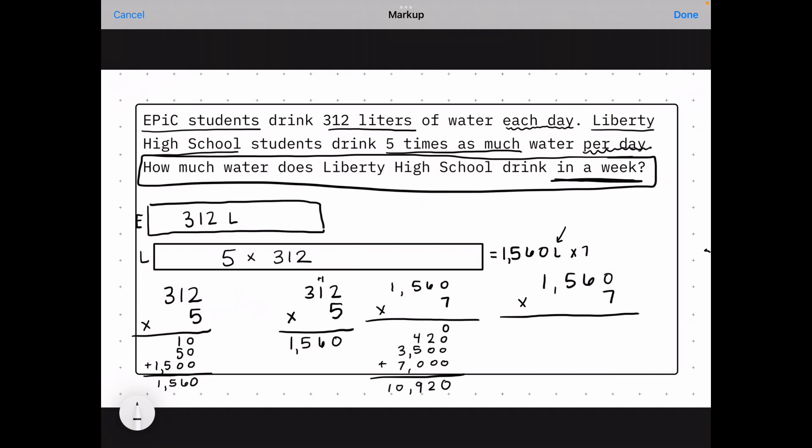Standard algorithm, 7 times 0 is 0, 7 times 6 is 42 so I carry the 4 this time, 7 times 5 is 35 but plus 4 is 39, 7 times 1 is 7 but plus 3 is 10. So same thing.